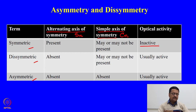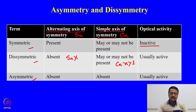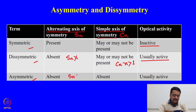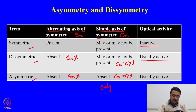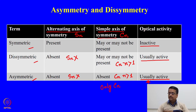When we look at a disymmetric molecule, the first thing we find is the absence of Sn. A disymmetric molecule may have Cn where n is greater than 1, and these molecules are usually optically active. In the case of an asymmetric molecule, it does not have Sn and it does not have Cn with n greater than 1, which means it has only C1. These molecules are also usually optically active. We use the term 'usually' because we will see towards the end of this lecture that an asymmetric molecule may also not be optically active.